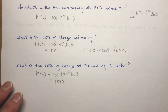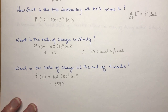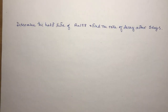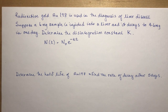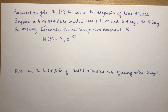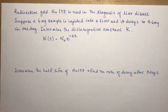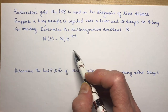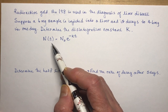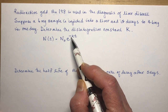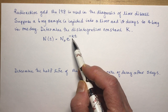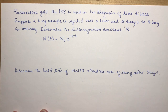These should be familiar from grade 11 and grade 12 exponential work. Now, another example: radioactive gold AU198 is used in the diagnosis of liver disease. Suppose a 6 mg sample is injected into a liver and decays to 4.6 mg in one day. Determine the disintegration constant K. The decay equation used is N(t) = N₀ times E to the negative KT, and K is what we want to solve for.